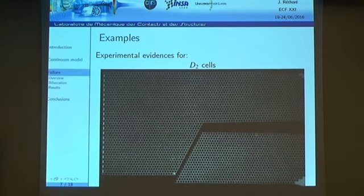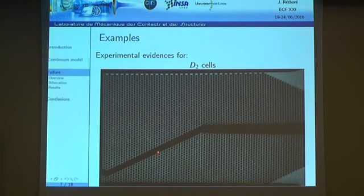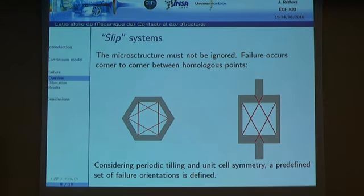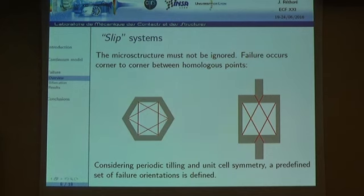We always observe a crack going from one corner to another. The idea is that nucleation occurs at one of these corners, and due to the periodicity of the material we can define a set of predefined crack orientations — only a finite number — shown as the red lines in the picture.